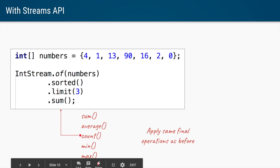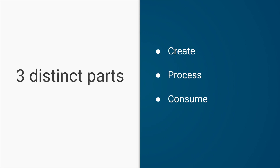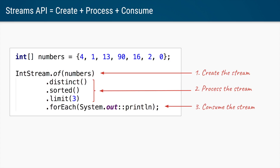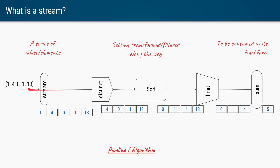There are three distinct parts to using a stream: create, process, and consume. In the same example, the first line creates the stream. The next methods — distinct, sorted, and limit — are where we apply our logic or algorithm: that is the processing step. At the end we extract values and do something with them, and that part is consumption of the stream.